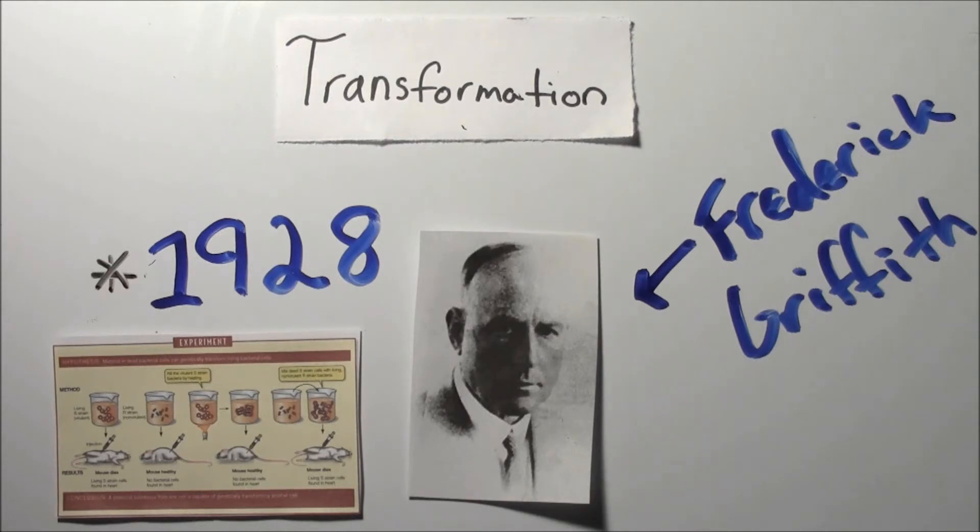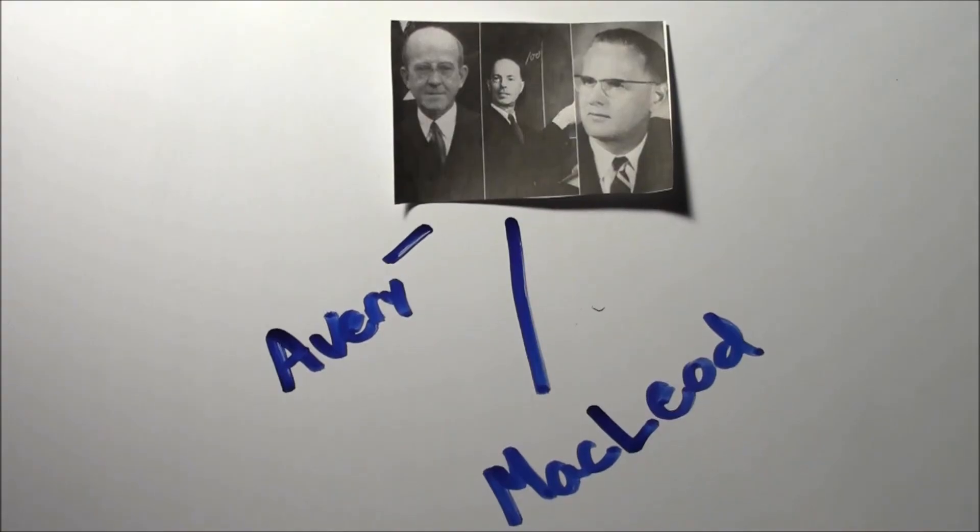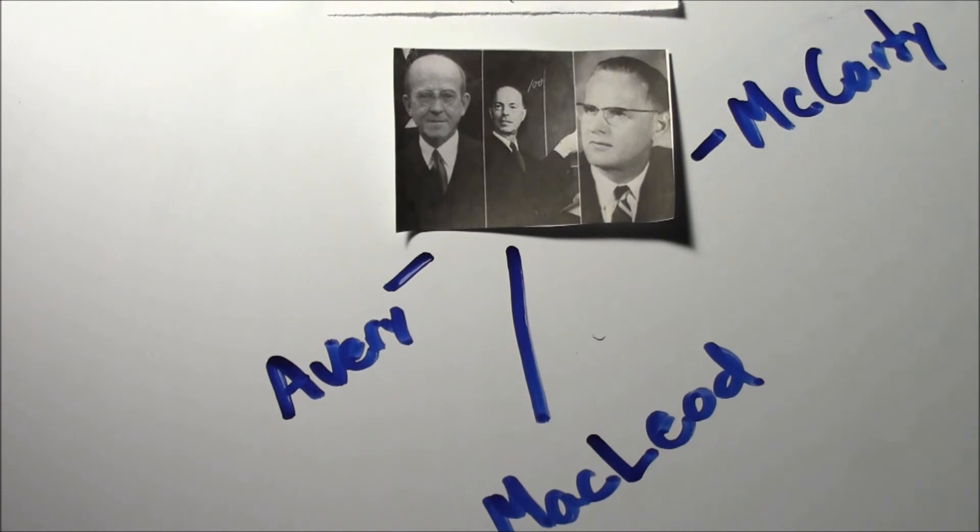In his experiment, Griffith hypothesized that some transforming principle from the heat-killed strain was responsible for making the harmless strain virulent. The transforming strain was identified as DNA by Avery, McLeod, and McCarty. These scientists isolated the DNA and used only the DNA to transform the bacteria.